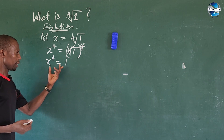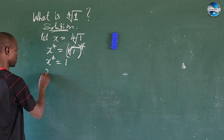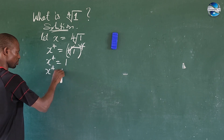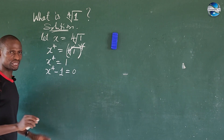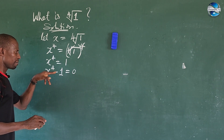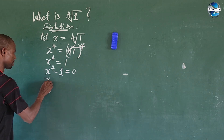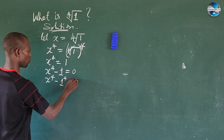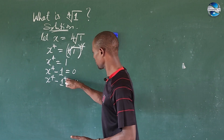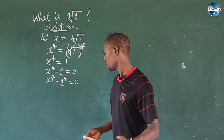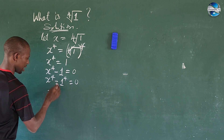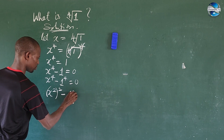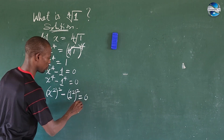We have to move this one to this side of the equation. So this will give us x to the power of four minus one equal to zero. We can raise this one to power four. So when we have x to the power of four minus one to the power of four equal to zero, the next thing is to split the power. Four can be written as two times two, so this gives us x to the power of two, all raised to the power of two, minus one to the power of two, all raised to the power of two, everything equal to zero.